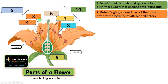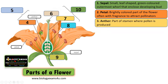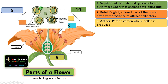The third whorl is a male reproductive structure which is called the androecium. It is made up of stamens. This is the anther, a part of a stamen where pollen grains are produced. These are pollen sacs in which microspore mother cells form microspores or pollen grains.